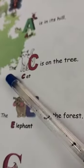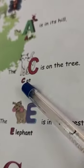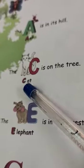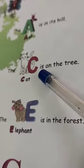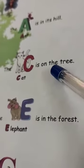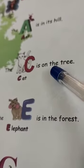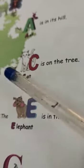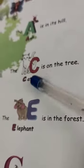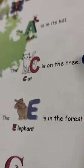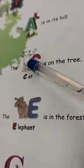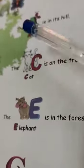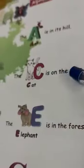Now: C-A-T, cat. I-S is O-N, on T-R-E-E tree. Here you can see the cat is on the tree. The cat is on the tree. It's purely an imaginative story.